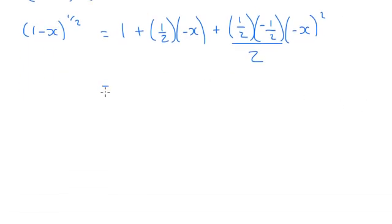So if I simplify that, that's 1, take away a half x, minus minus from here, because this minus is being squared. So minus 1 over 8 x squared.